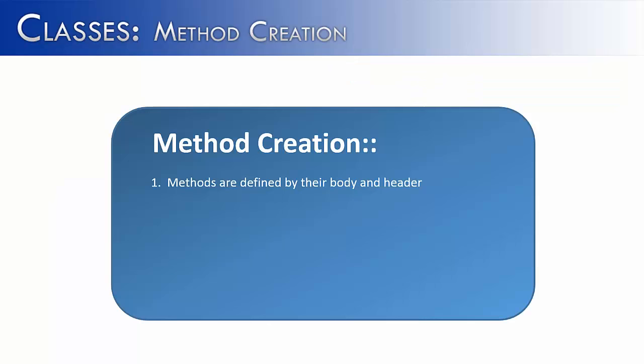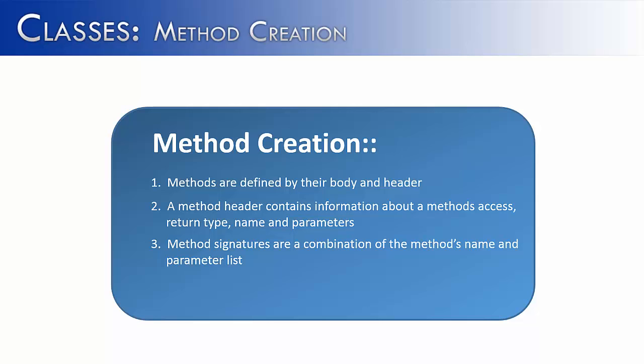So if you want to talk about a method and how it's made, you would talk about its two parts: the body and the header. The header contains information like access, public, private, or protected, return type, what type of data is going to be returned to the program, not the data itself but what type is it going to be, its name, which follows all the rules and conventions that we've laid out in the prior slides, and the parameters, the variables that a method would use. A method signature is just a method's name and its parameters put together, and it's used to identify methods.